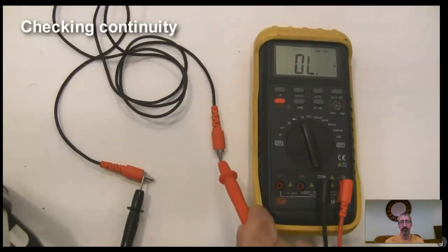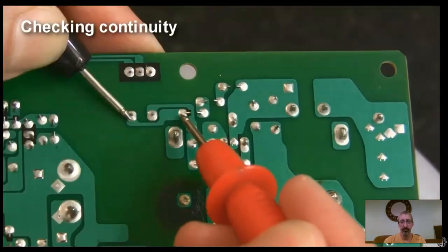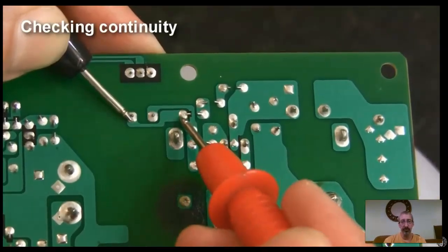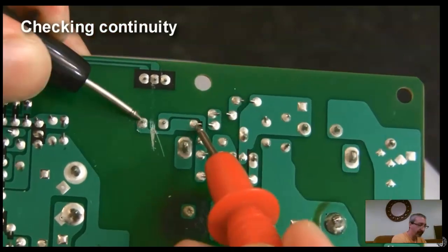You can use the continuity function to check if cables are internally broken or not. In the context of circuit boards, if there's a good copper trace between any two points, the multimeter will beep. If the circuit board is messed up, no beeps for you.